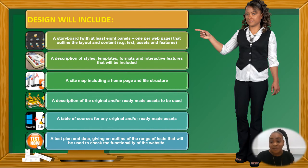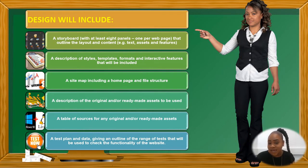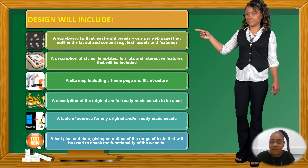You will need a site map, including a homepage and file structure. You will need a description of the original and already-made assets to be used. You'll need a table of sources for any original or ready-made assets — we'll go over the difference between ready-made and original assets later on. And finally, in P3, you'll need a test plan and data giving an outline of the range of tests that will be used to check the functionality of your website. Good luck.